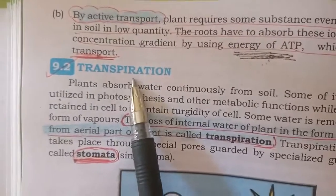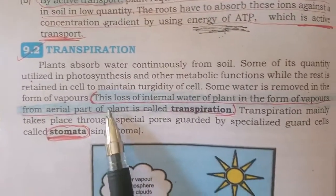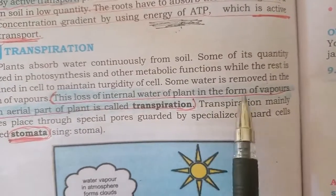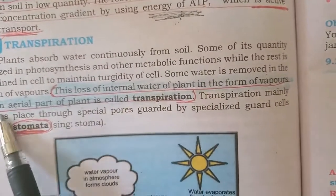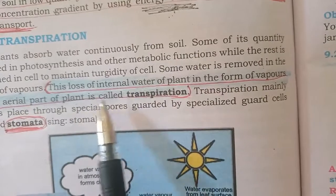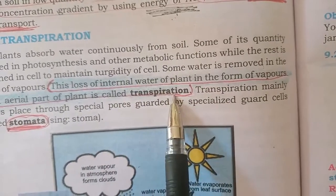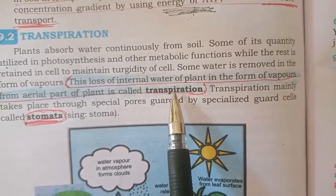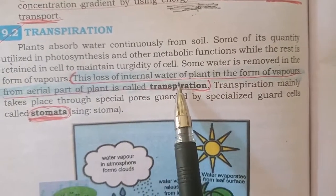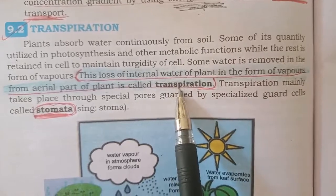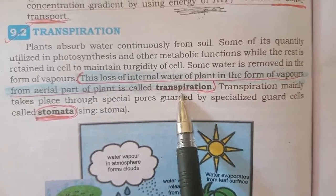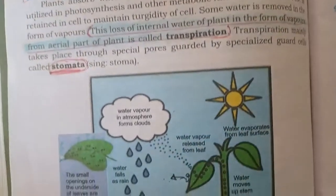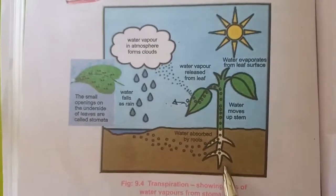Transpiration — in the fourth line: the loss of internal water of plant in the form of vapors from the aerial part of plant is called transpiration. یعنی water leaves کے ذریعے بہا نکلنا — اس کو ہم کیا کہیں گے — transpiration.